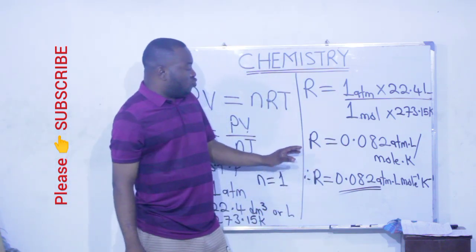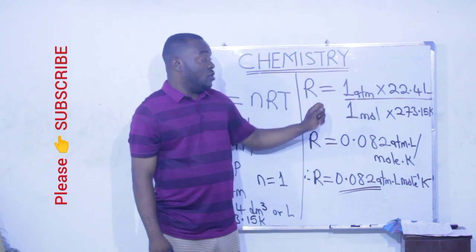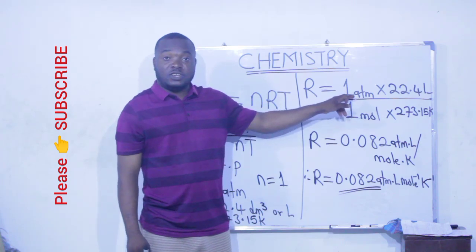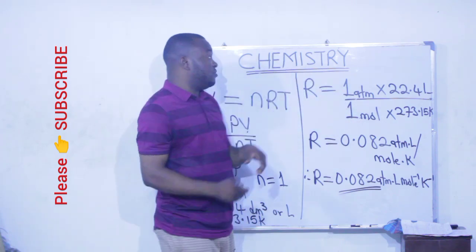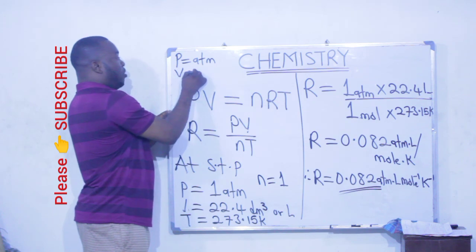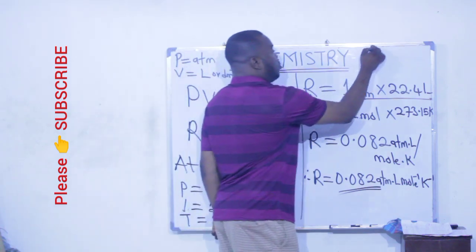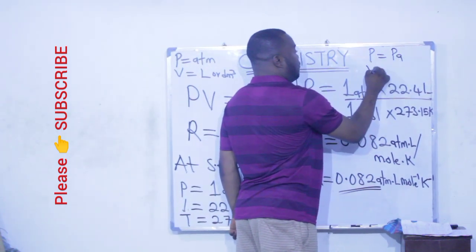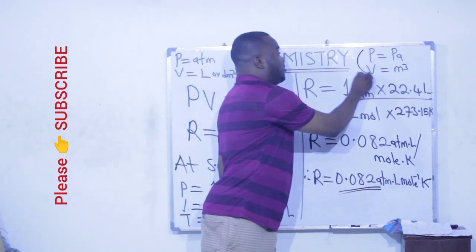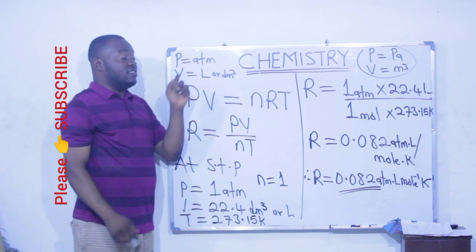Remember this: for you to be able to get this value, your pressure must be in atm units while your volume must be in liter units. Notice this, if you use pressure in Pascal units, you are going to use volume in meter cube units. When pressure is in atmosphere, your volume must be in liter or dm cube. But when pressure is in Pascal units, your volume must be in meter cube. Do not interchange them. If your pressure is in Pascal, make sure your volume is in meter cube. But if your pressure is in atmosphere, make sure your volume is in liters.